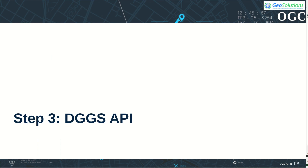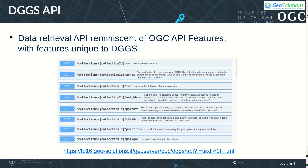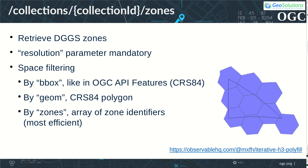While classic OGC services can be used to explore data, a dedicated API can take advantage of the unique nature of DGGS, both in terms of extra semantics and performance. The group designed a DGGS API reminiscent of OGC API Features — in particular, data is still organized in collections. However, the API comes with some unique additional abilities. Access to zones requires usage of the target resolution. Space filtering can be performed via a few different flavors: by a CRS84 bounding box, by a CRS84 polygon, or by a list of parent zone identifiers. The latter is native to DGGS and the most efficient in terms of data retrieval.